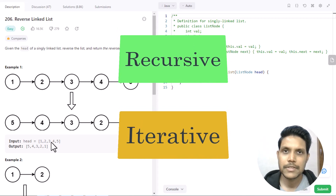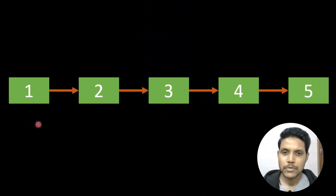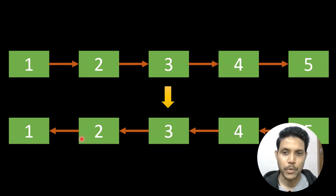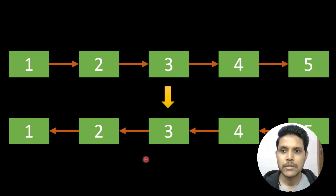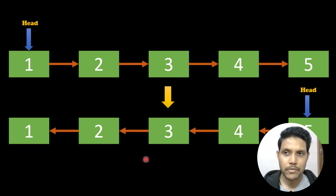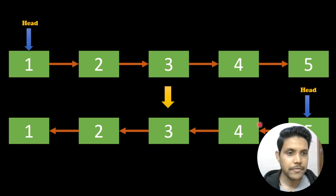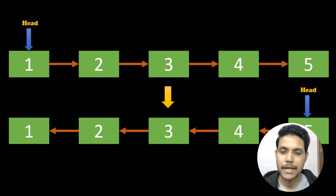Let's first see the recursive approach. Here is the linked list given to us with 5 nodes: 1, 2, 3, 4, 5. What we need to do is reverse the linked list to 5, 4, 3, 2, 1. You can see that the pointers are reversed in every node. The head that we were given was at node 1, but what we need to return is node 5. So this 5 now becomes the new head that we need to return for the reversed linked list.